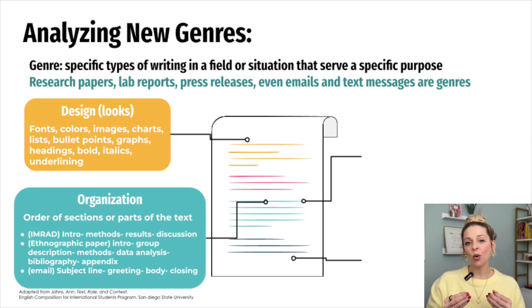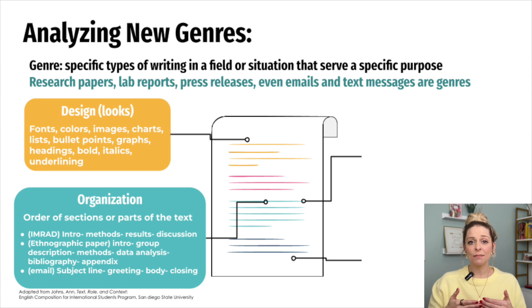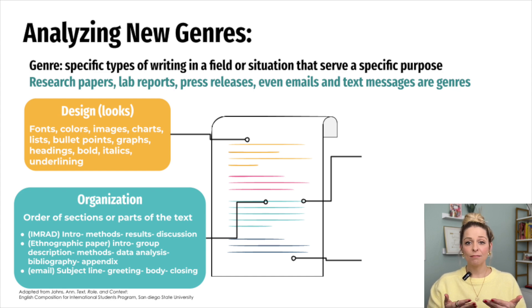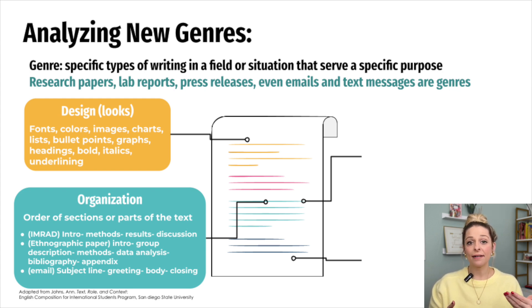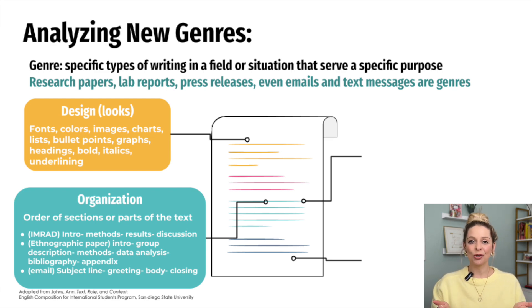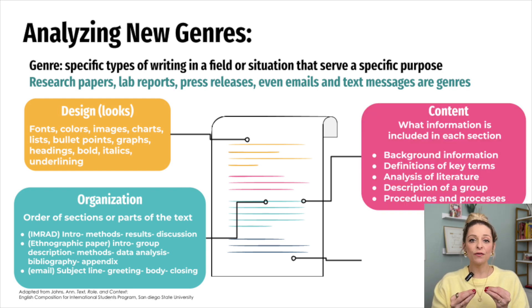Next is O for Organization, or order. For example, in a classic research paper, sometimes called an IMRAD, you have an introduction, methods, results, and discussion. But in an ethnographic paper, you might have an introduction, group description, methods, data analysis, bibliography, and an appendix. Or in an email, you'll have the subject line, a greeting, the body, and your closing.